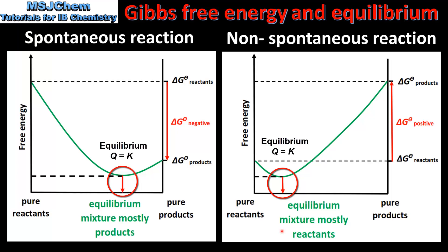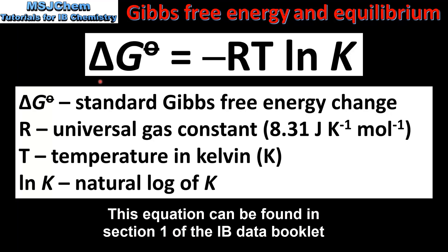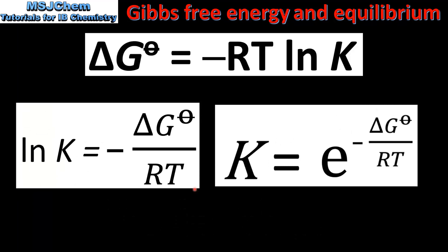Next we look at how to calculate the standard Gibbs free energy change when given the value of the equilibrium constant K. The standard Gibbs free energy change is the change in Gibbs free energy measured under standard conditions, given by ΔG° = -RTlnK. R is the universal gas constant, T is the temperature in Kelvin, and lnK is the natural log of K. This equation can also be rearranged to find K, which equals e to the power of negative ΔG° divided by RT.